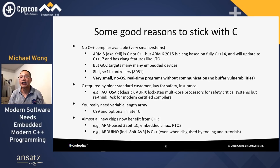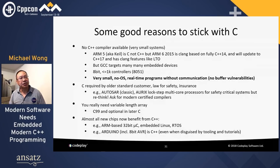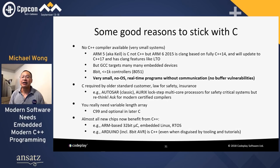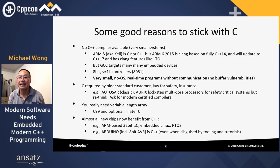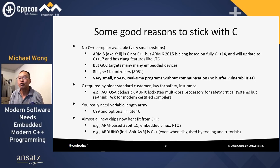C might be required or mandated by older standards, customers, law, safety, or insurance — classic AUTOSAR has to follow C. But even AUTOSAR, especially the adaptive AUTOSAR fitted for parallelism, is now switching to support C++. You might have an Infineon RX with a lockstep multicore processor for safety-critical systems. You might really need variable-length arrays, which only C99 has. As a result, almost all new chips now benefit from C++: ARM-based 32-bit microcontrollers, embedded Linux, autos, even the Arduino is C++.